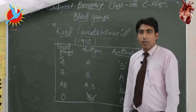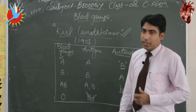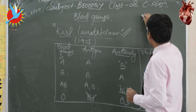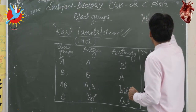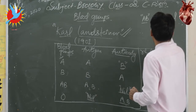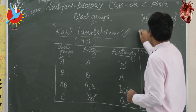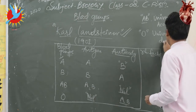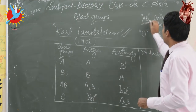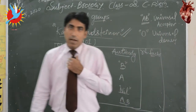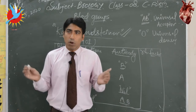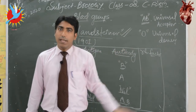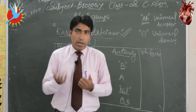One more interesting thing about human blood groups: a person with AB blood group is called a universal acceptor, meaning they can accept anyone's blood easily without any problem. A person with O blood group is called a universal donor, meaning they can donate blood to anybody without any problem — no clumping or agglutination will occur.